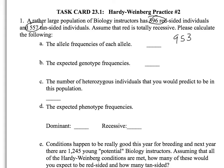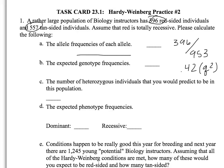Then you can use that total to find the frequency of the genotypes. For the first one, the red ones which are recessive, 396 divided by that total value of 953 gives you the frequency of the reds which equals 0.42. Since the reds are recessive, that's the q squared value.